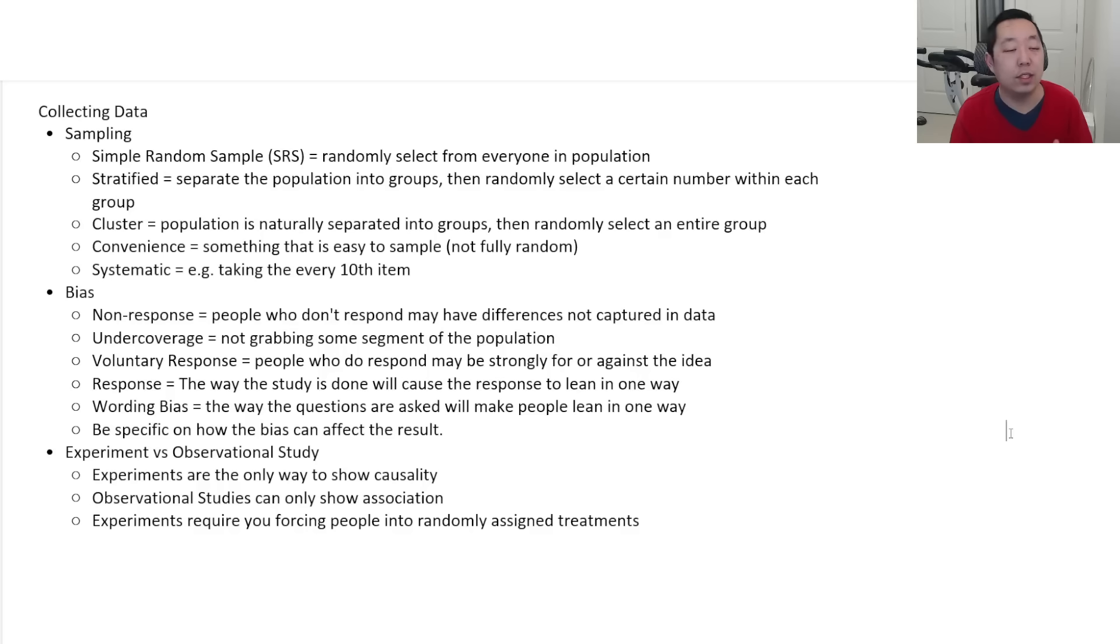Response bias is the way that the study is done that may introduce the response to lean in one way. That's different from wording bias, which is how the question is worded. The response bias is, for example, if I'm asking you, have you ever broken the law, and it's an anonymous survey, as opposed to you randomly get selected, you go talk to a police officer and they ask you, have you ever broken the law? You may answer the question a little bit differently because of the situation, not because of the way it was worded, but because of the situation.